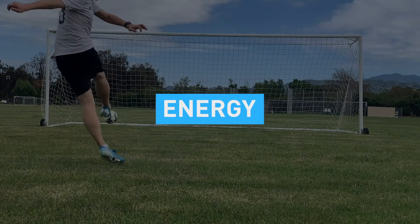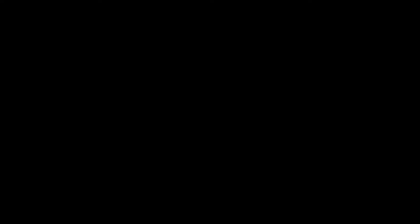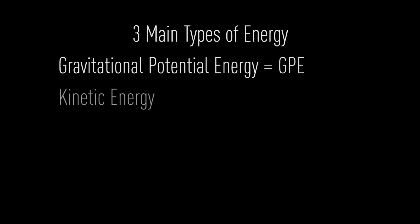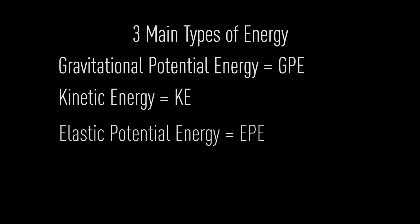Now let's talk about energy. There are three main types of energy: gravitational potential energy, or GPE; kinetic energy, or KE; as well as elastic potential energy, or EPE. All of these energy types use the unit of joules, expressed with the letter J.